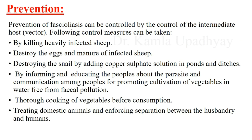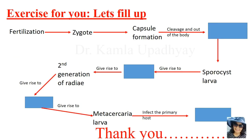Prevention of fascioliasis can be achieved by controlling the intermediate host (snail vector). Other control measures include killing heavily infected sheep and destroying infected manure and eggs; adding copper sulfate solution to ponds and ditches to kill snails; educating people about the parasite; promoting cultivation of vegetables in fecal-pollution-free water; cooking vegetables before consumption; and treating domestic animals while enforcing separation between husbandry and humans.